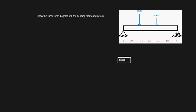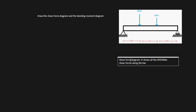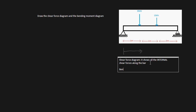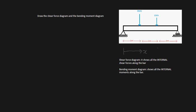What is a shear force diagram? It shows all the internal shear forces along the bar. Internal is important because we actually plot the internal shear force versus our horizontal distance x, so we can find out what the shear force is at any particular distance along our bar. A bending moment diagram shows all the internal moments along the bar, likewise plotted against our horizontal distance x, so we can figure out what the internal moment is at any distance along our bar.